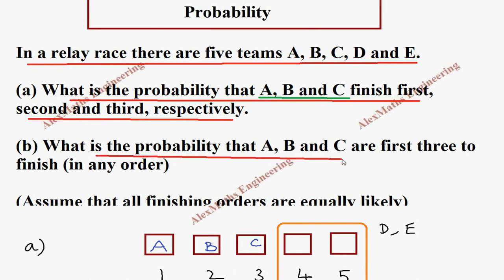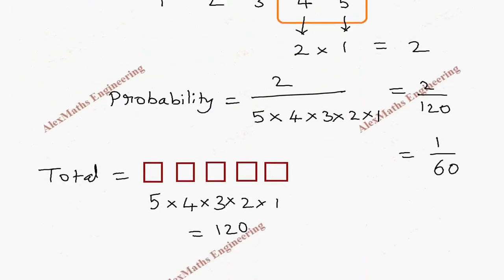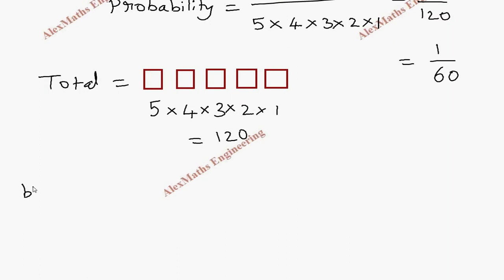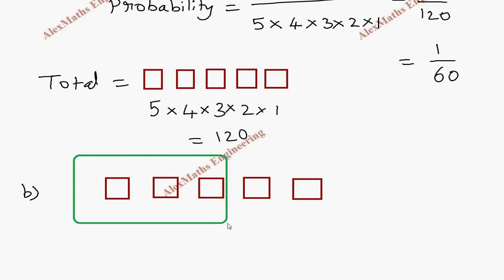Coming to subdivision two, they ask: What is the probability that A, B, C are the first three to finish? It can be in any order. So once again we take five boxes because there are five positions. One, two, three, four, five. And they say in the first three here, A, B, C occupy. It can be any order. And the last two places will be occupied by D and E.